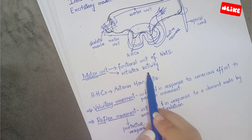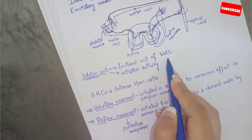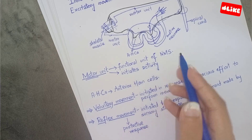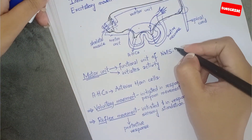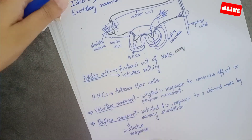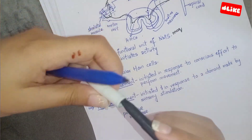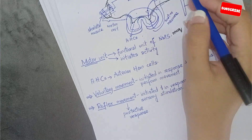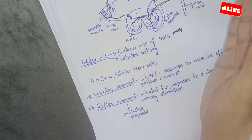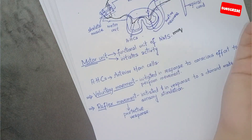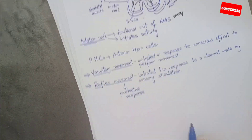The motor unit was mentioned earlier. The new thing is that it is the neuromuscular system's functional unit — the motor unit. If asked what the functional unit of the neuromuscular system is, the answer is the motor unit. It is used to initiate movement: a nerve fiber comes to the muscle fibers, and when it carries signals, the movement will initiate. AHC stands for anterior horn cells.